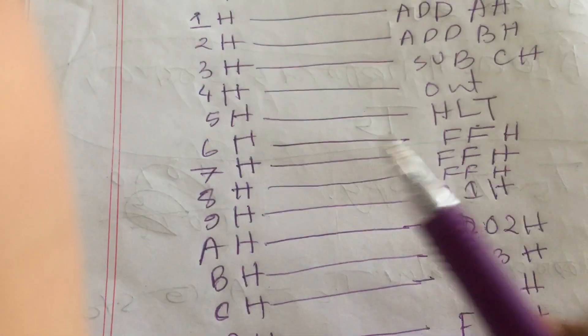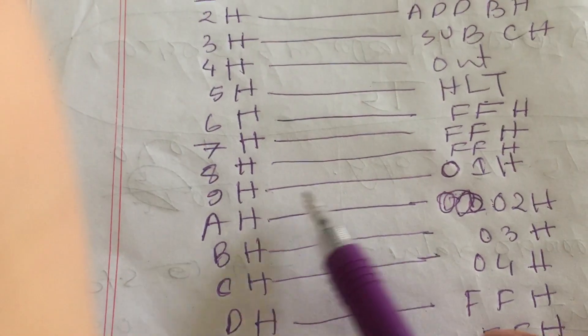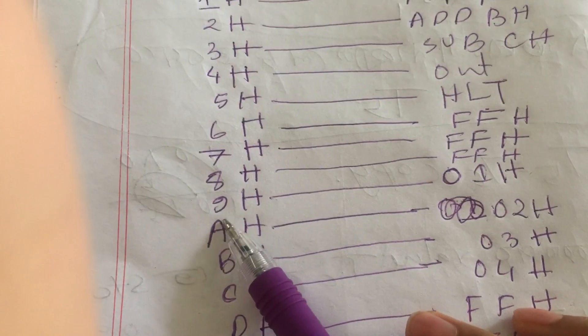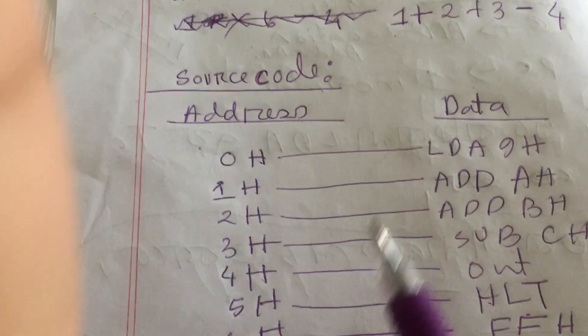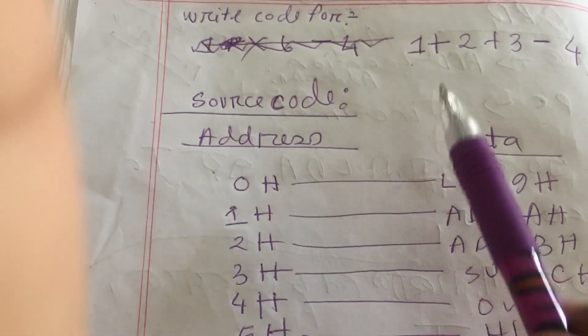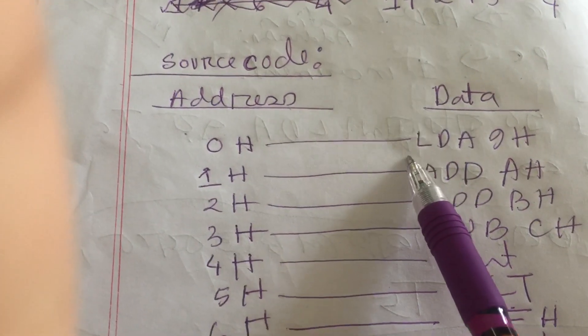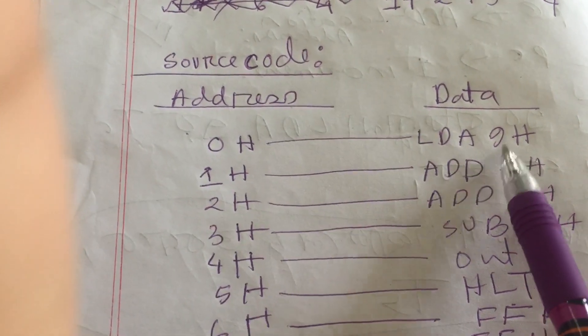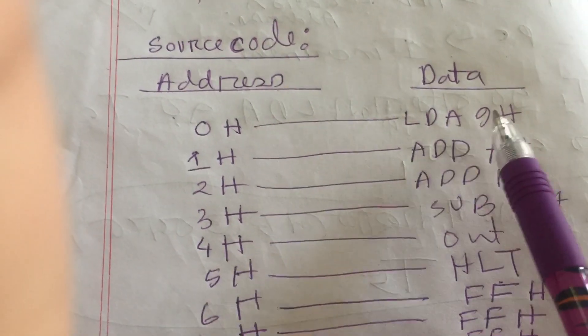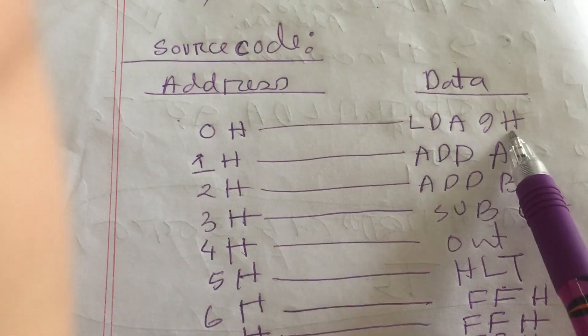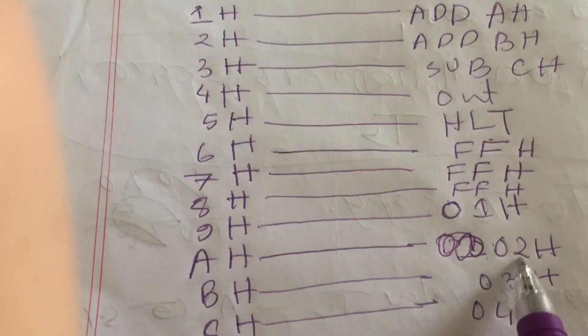So in where we have stored that 1, let's see. We have stored that 1 in 9H, so we have to write like this that we are loading the number 9H, and in 9H we have 1.